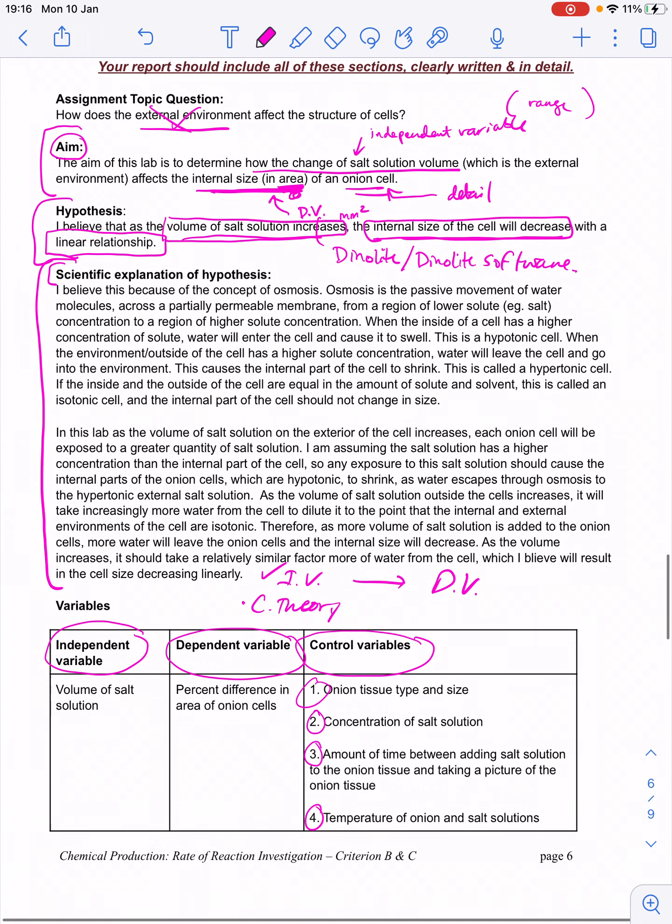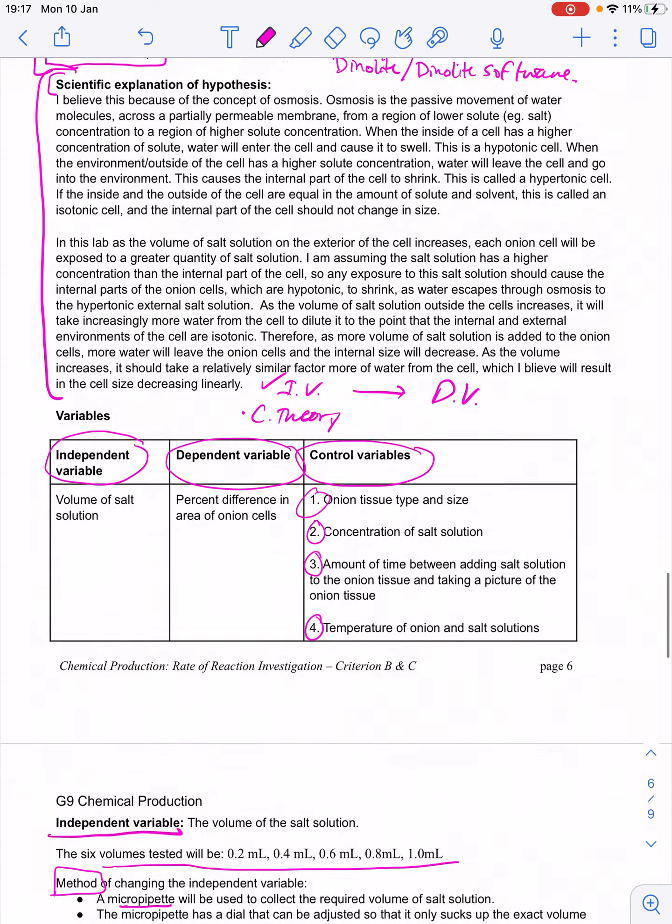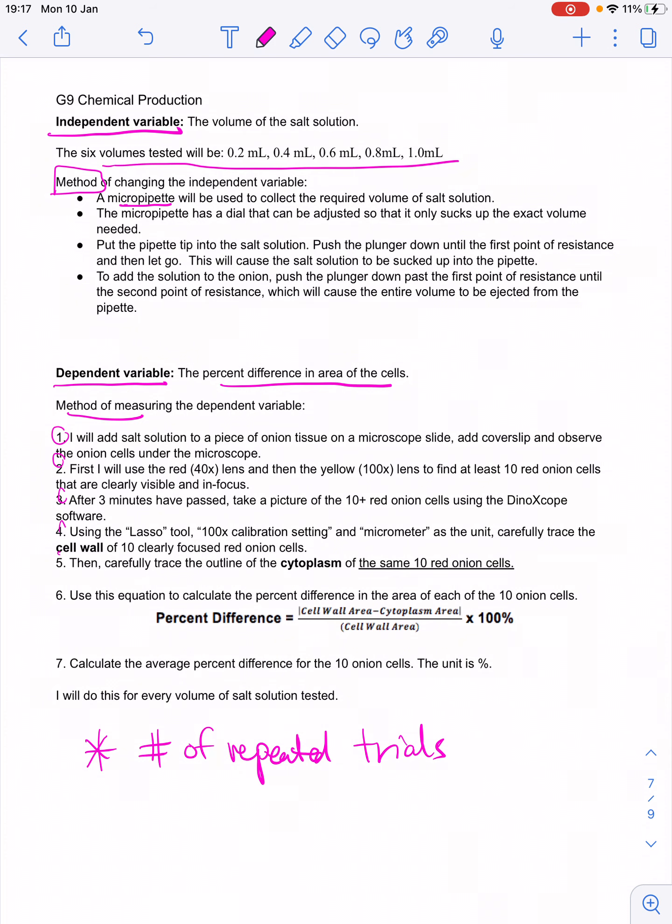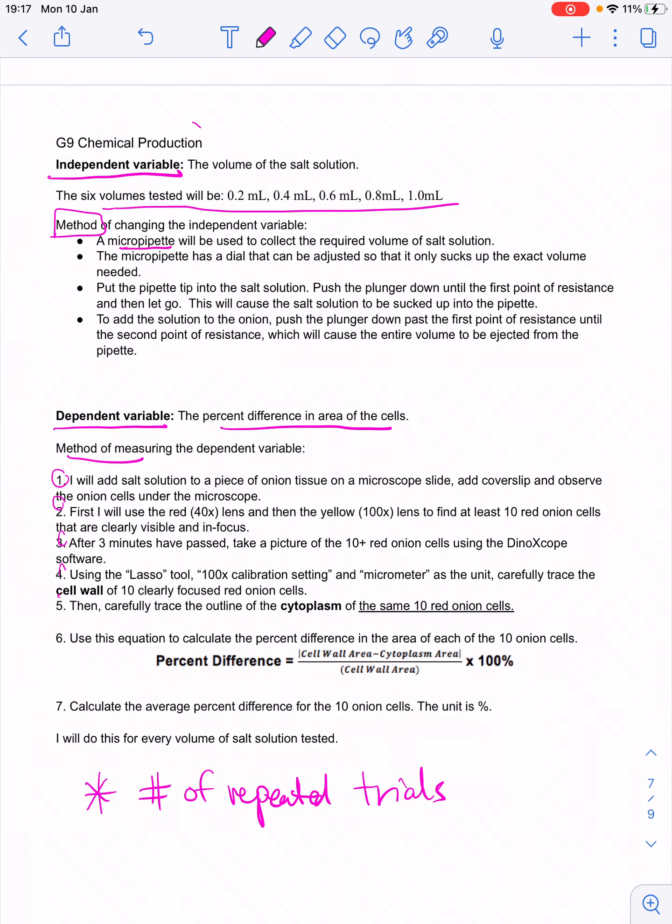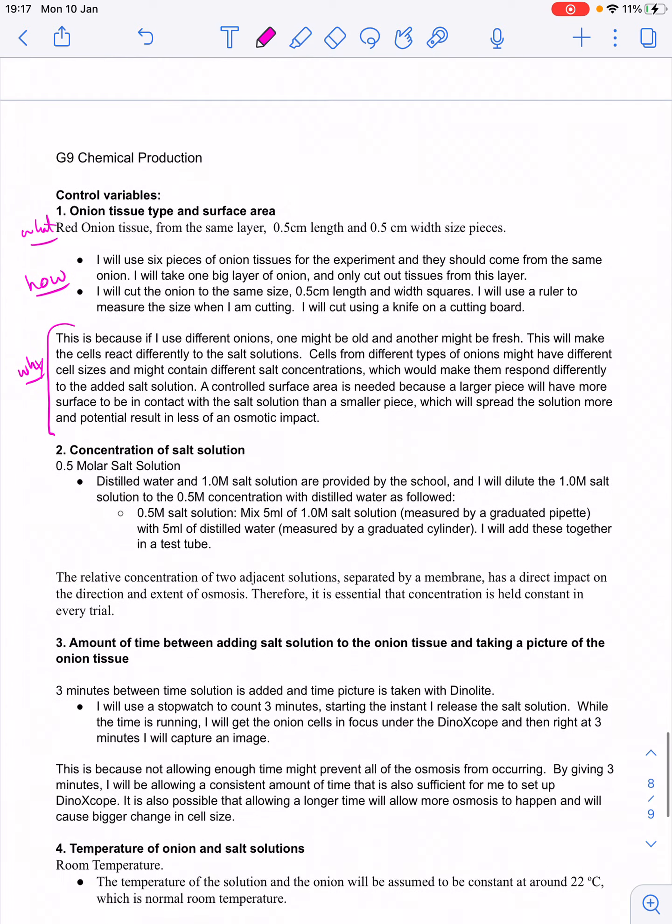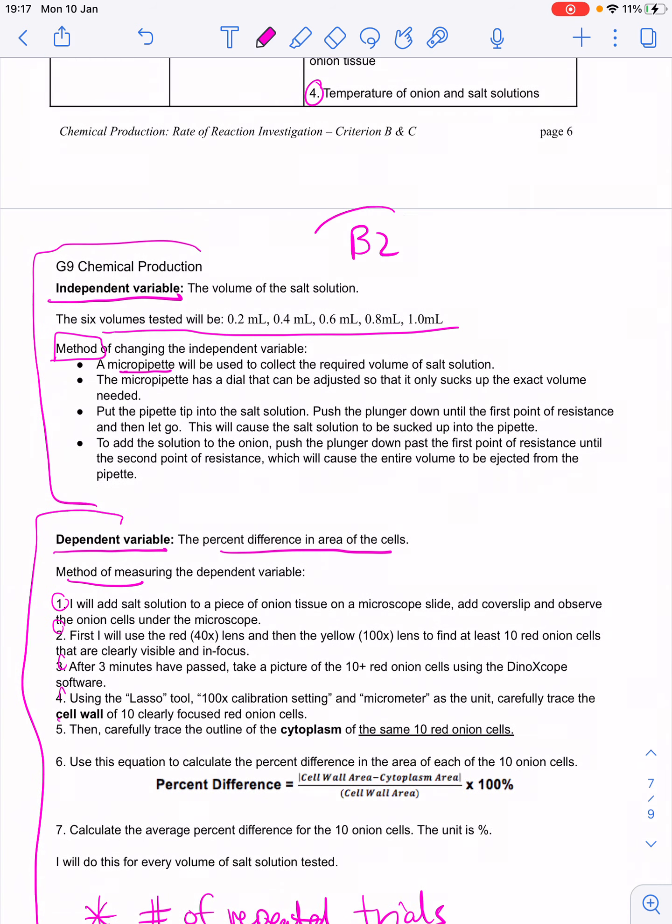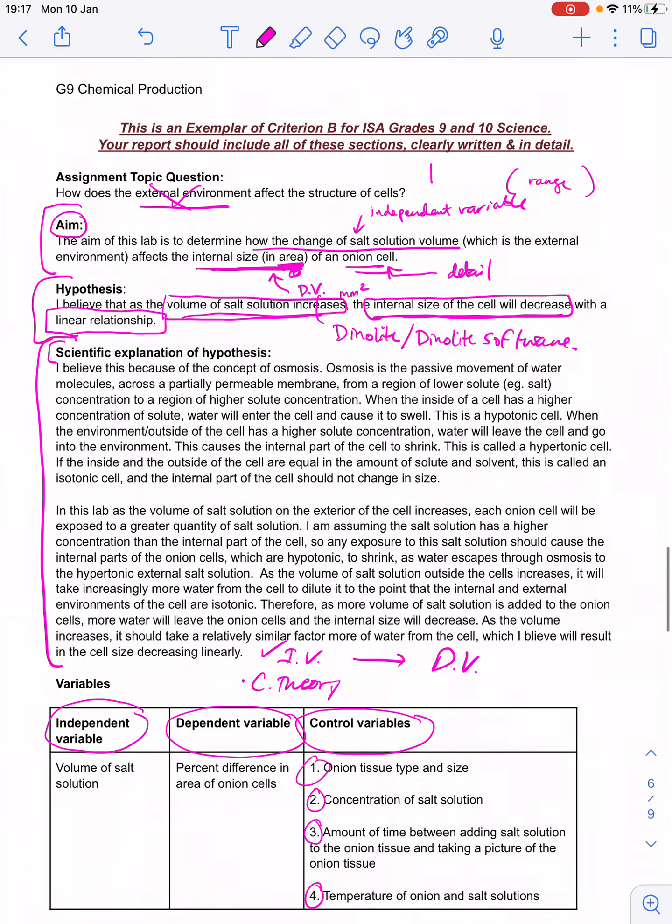So part one is your outline and the point of the investigation, your prediction, and the scientific concepts to back up your prediction. And then B2 and B3 are really all about your method and how well you explain your method. But it has to be broken down into these parts, the independent variable method, the dependent variable method, or identification and method. And then the control variables and method is strand B3. So this is B2, independent and dependent. And this whole part here was B1. So I hope this video clarified a bit of the expectations for criterion B. This exemplar is in your handout. Good luck.